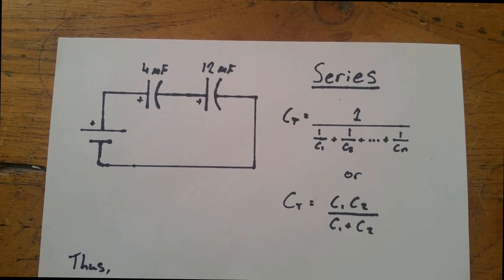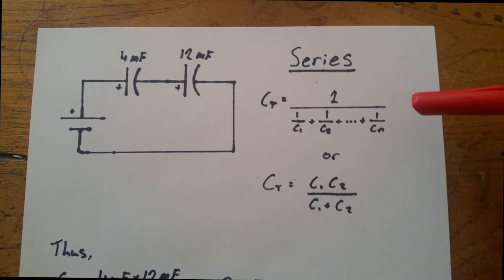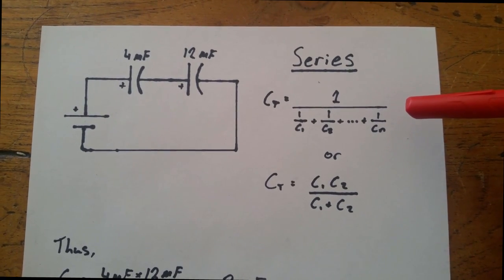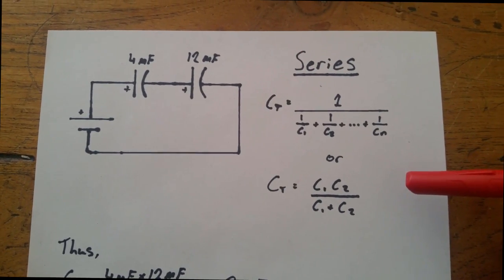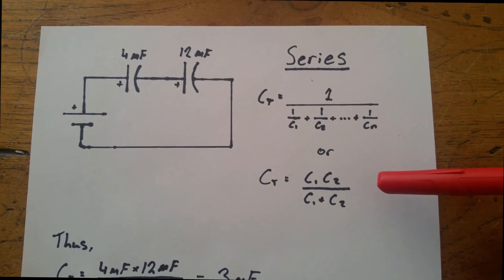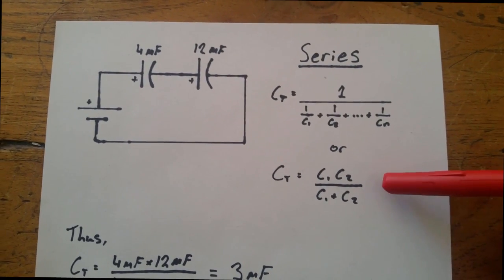When dealing with capacitors in a series configuration, the direct method to calculating the total capacitance is to use this equation. However, there is an alternate equation for a pair of capacitors in a series configuration.